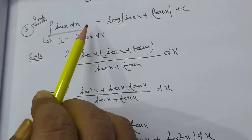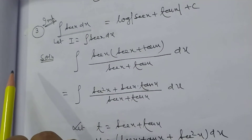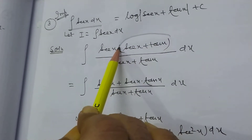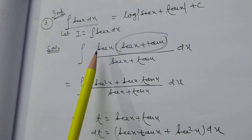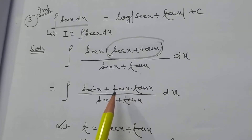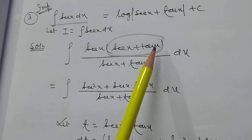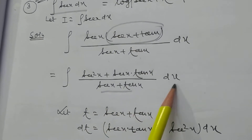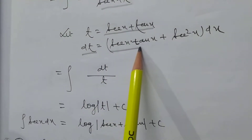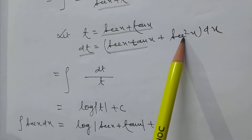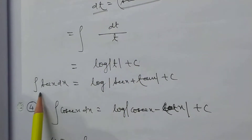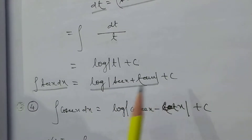Now for integration of sec x dx, this cannot be integrated directly. So we multiply numerator and denominator by the integrating factor (sec x + tan x), giving (sec²x + sec x·tan x)/(sec x + tan x) dx. Let t = sec x + tan x; then dt = (sec x·tan x + sec²x) dx. So it is in the form dt/t, giving log|t| + c. Therefore, integration of sec x dx equals log|sec x + tan x| + c.